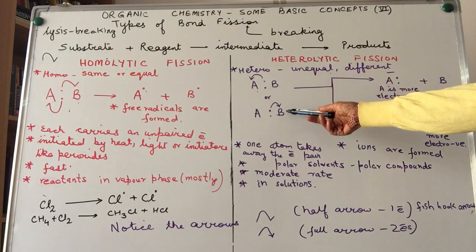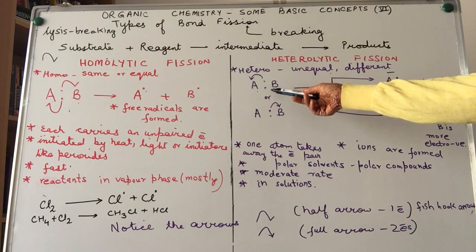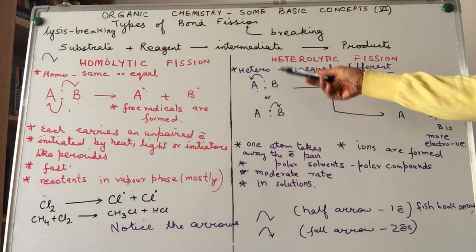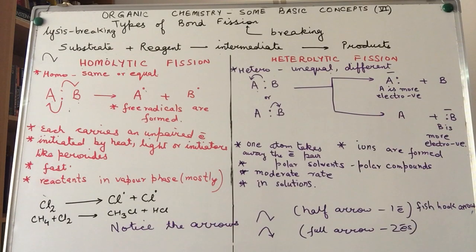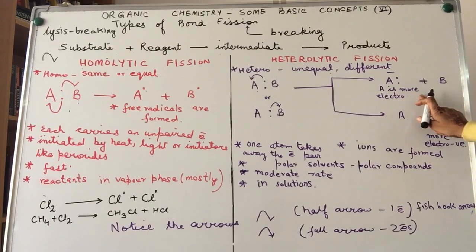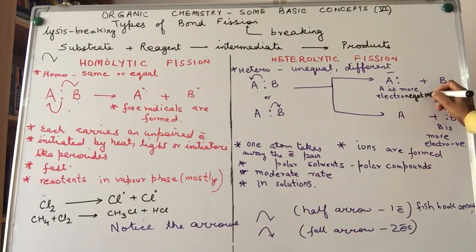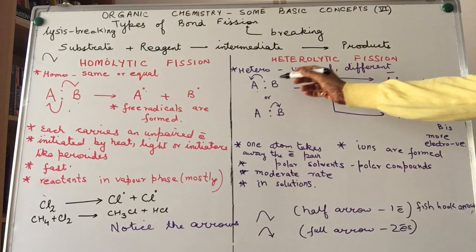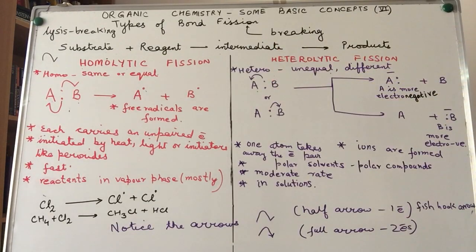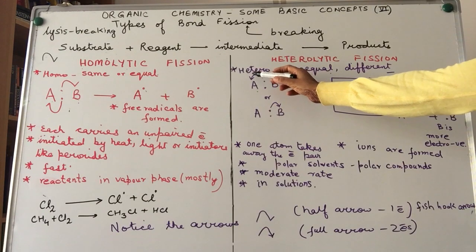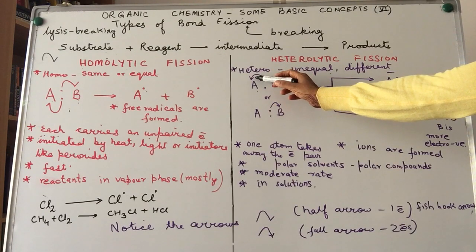We've taken two possibilities. A and B have come together to form a bond. A being more powerful—in the language of chemistry we use the word electronegative. Whosoever is more electronegative takes away the shared pair of electrons. Unlike homolysis where they were taking one electron each, here A has taken away both electrons of the shared pair. That is why if you notice, we have indicated it by a complete arrow, not half arrow like we did in homolysis.